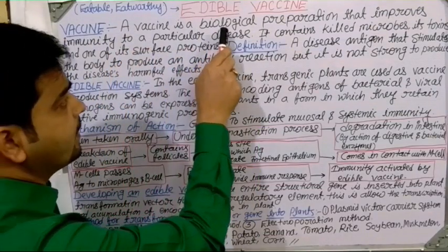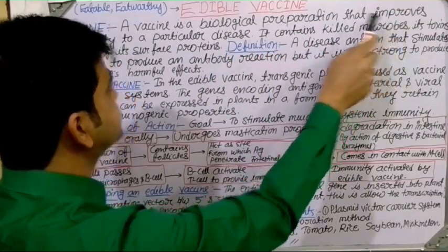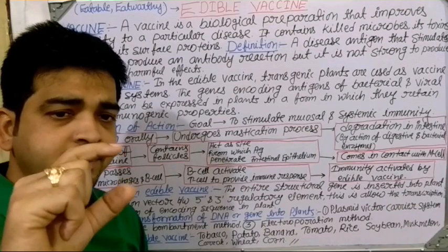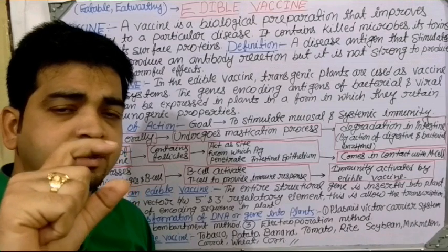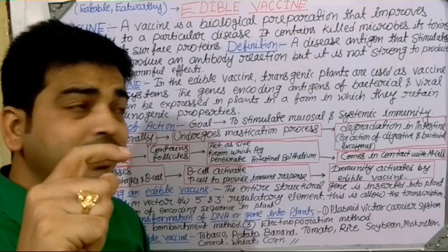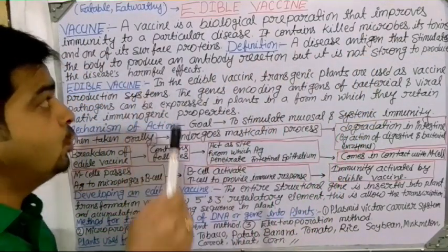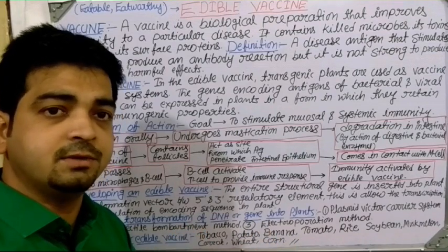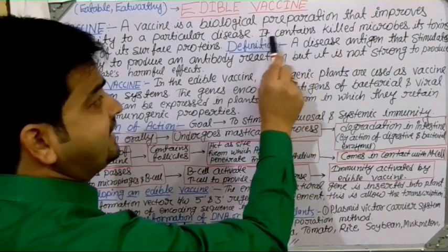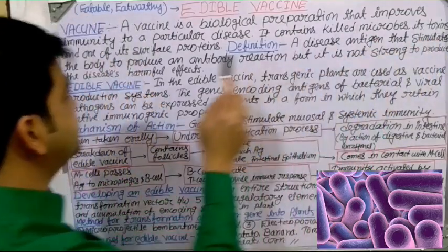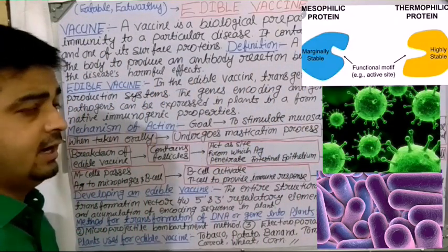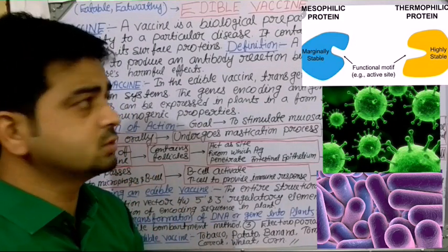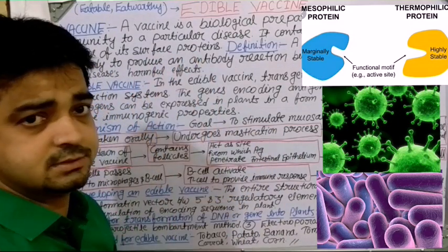A vaccine is a biological preparation that improves immunity to a particular disease. It is a biological preparation — there will be organisms, microbial cells, different types of cells — which improves the immunity to a particular disease. It may contain killed microbes, their toxins, or one of their surface proteins.